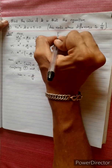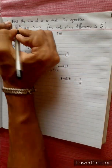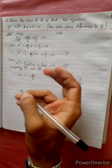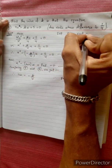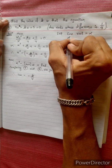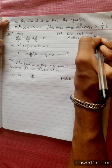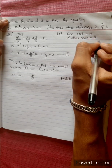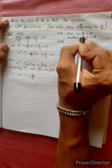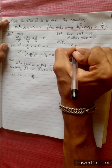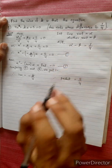Which difference is 1 by 4? Let alpha and beta be the roots. According to the question, alpha minus beta equals 1 by 4. This is the difference of 1 by 4.